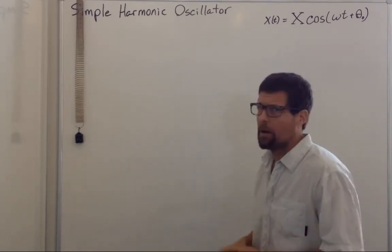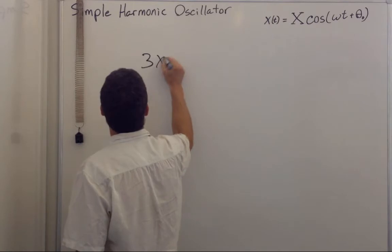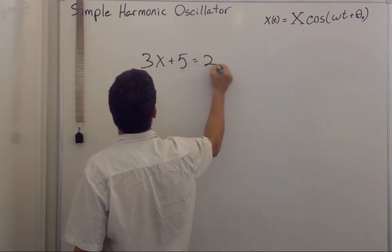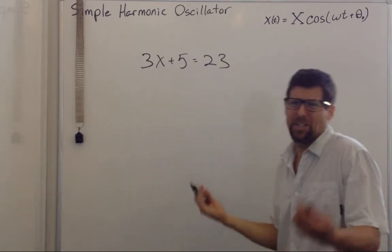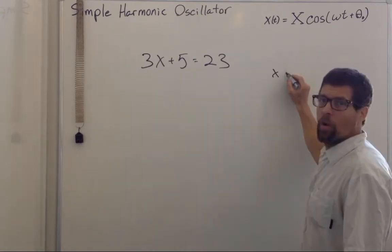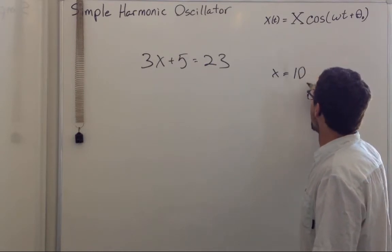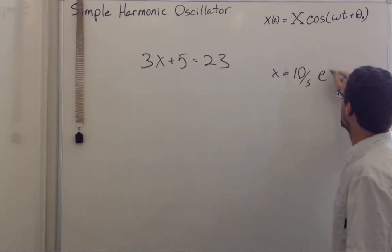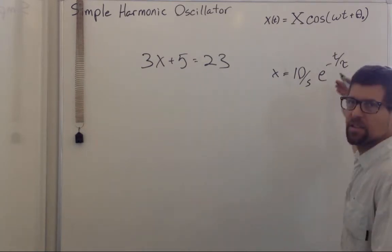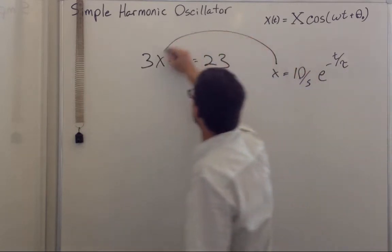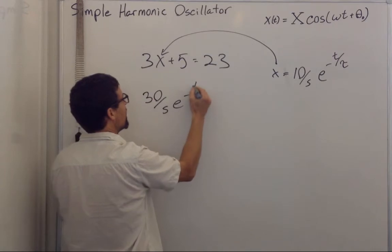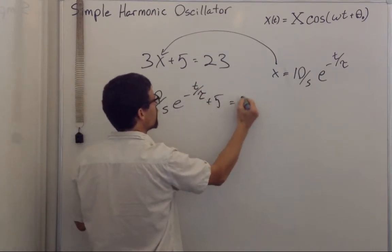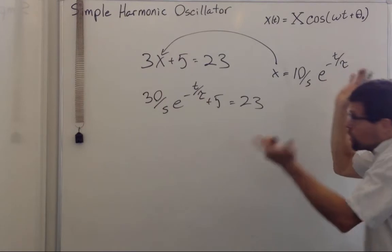Let me give you an example. Let's say we have 3x plus 5 equals 23. We could solve that algebraically, but let's just pick an answer. What if x equals 10 per second times e to the negative t over tau where tau is some time constant? We substitute this in and we get 30 per second times e to the negative t over tau plus 5 equals 23.